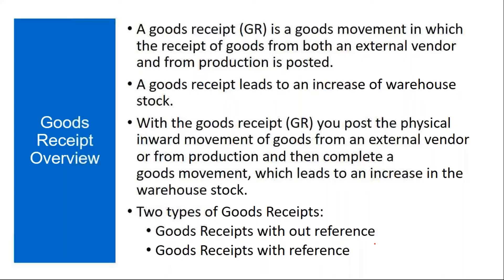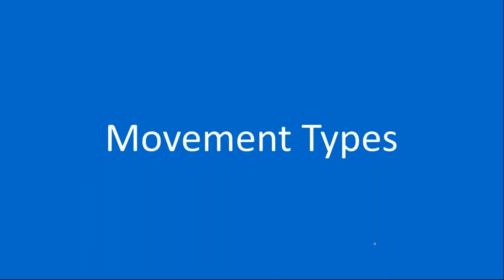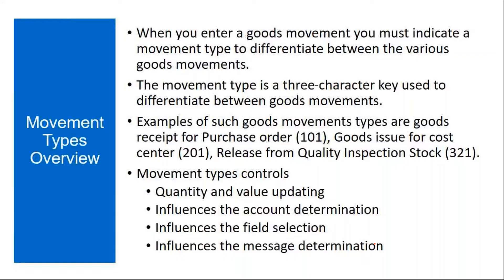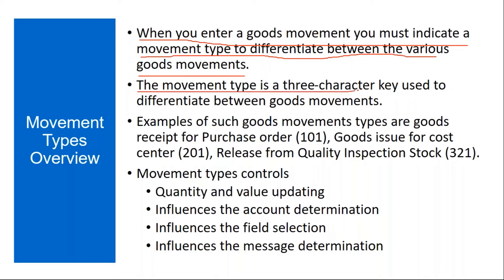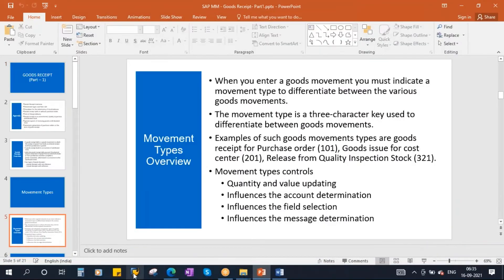Before going into Good Receipt, we need to understand movement types. Whenever you enter a goods movement, you must indicate a movement type to differentiate between the various goods movements. Any goods movement in the SAP system is identified with a three-character movement type. The movement type is a three-character key used to differentiate between goods movements, which you can see in the MIGO transaction.